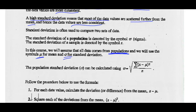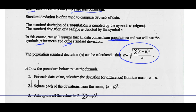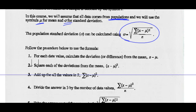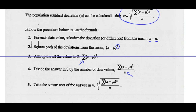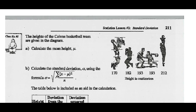The population standard deviation can be calculated using this formula. Follow the procedure below: for each data value, calculate the deviation or the difference from the mean — that's your data value minus your mean. Then square each of those values. Then find the sum of all those squared values. Finally, divide by the total number of data, and take the square root of that number. So let's try doing one by hand on the next page.